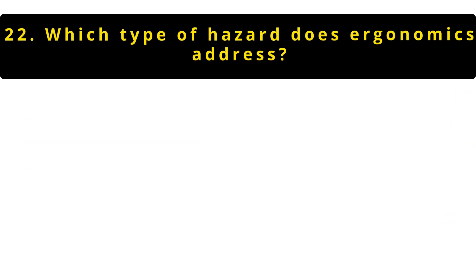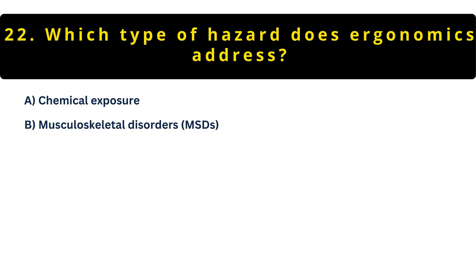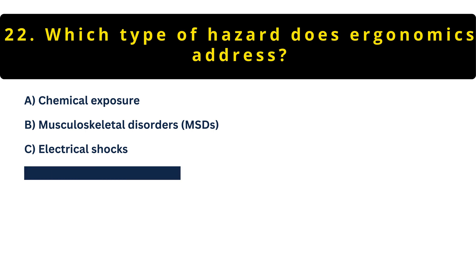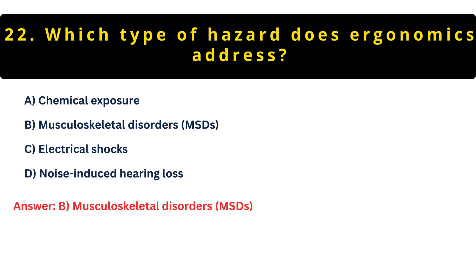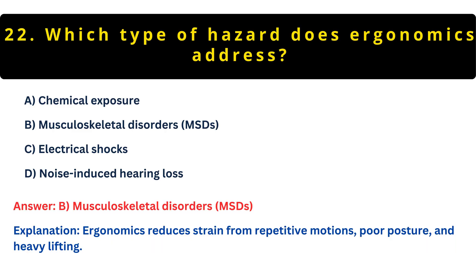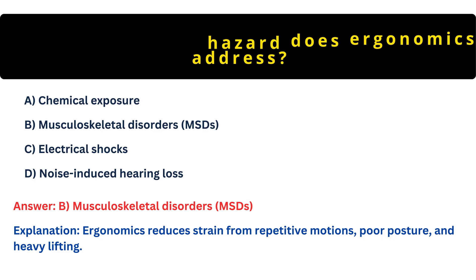Question 22: Which hazard does ergonomics address? Option A: Chemical exposure. Option B: Musculoskeletal disorders. Option C: Electrical shocks. Option D: Hearing loss. The answer is B — musculoskeletal disorders. Ergonomics helps prevent back injuries and repetitive strain injuries that develop over time from poor workstation setups.